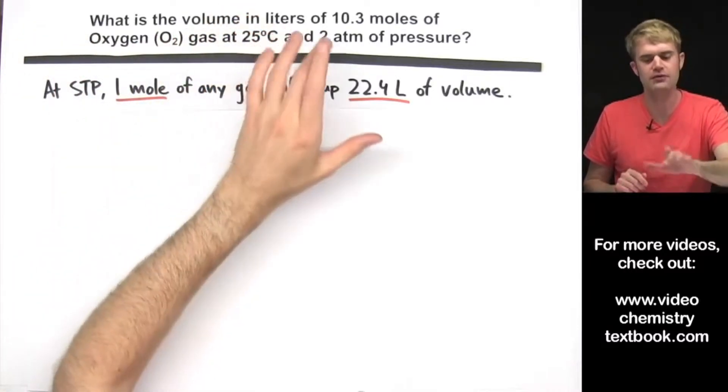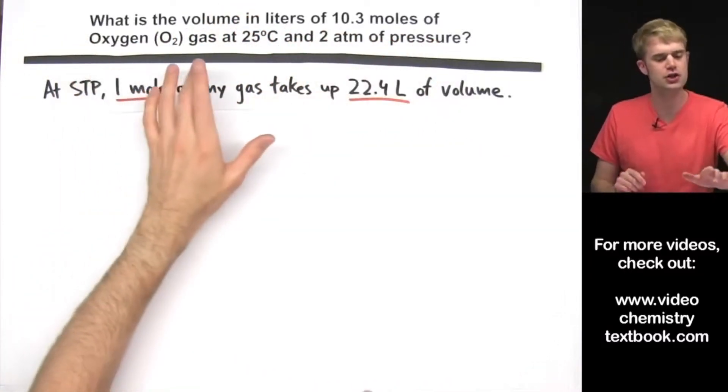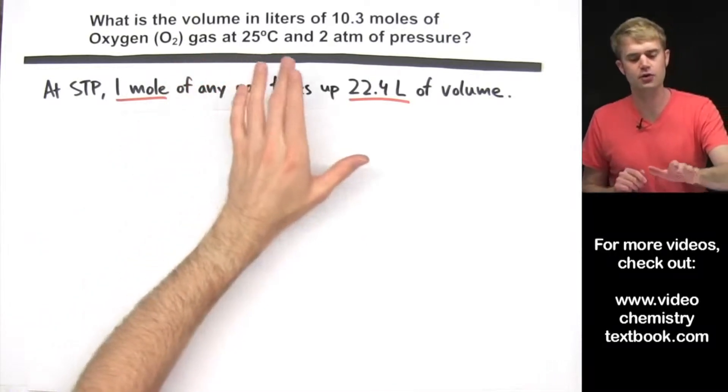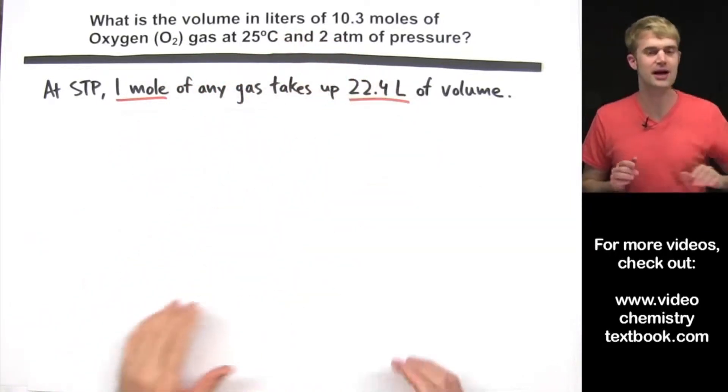What is the volume in liters of 10.3 moles of oxygen gas at 25 degrees Celsius and 2 atm of pressure?